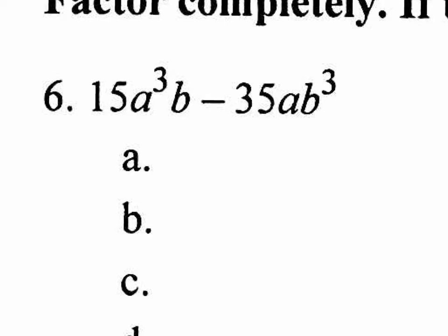What's the first type of factoring you should always attempt? Pulling out the GCF — the greatest common factor. In other words, is there something in common in the first term and the second term? It's definitely the multiple of five, so you could pull out a five.